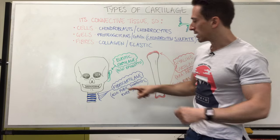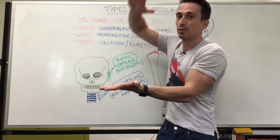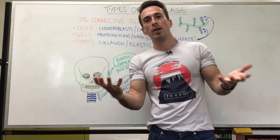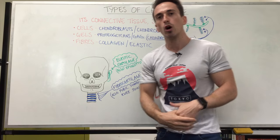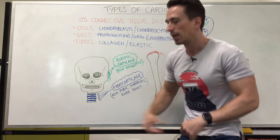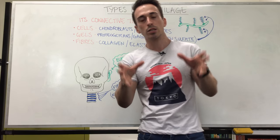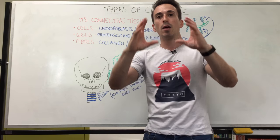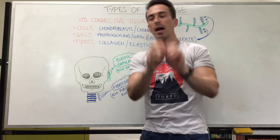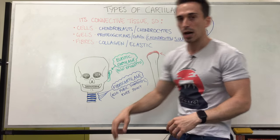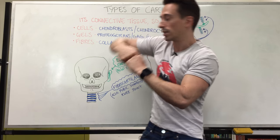The second type is fibrocartilage. Fibrocartilage is there to resist compressive forces. The part of our body that needs to resist compressive forces most is the vertebral column, so the discs between our vertebrae are made up of fibrocartilage. Other locations include the pubic symphysis, where the two pubic bones come together, and also the knee joint — again to resist compressive forces.